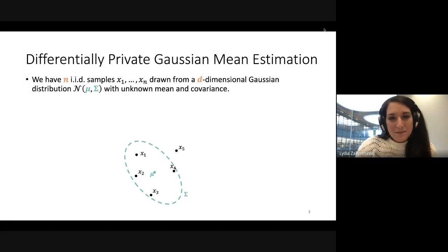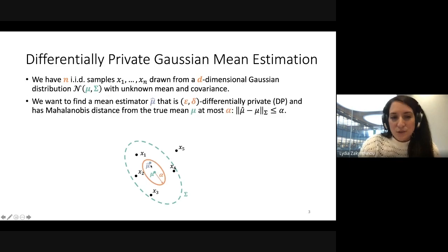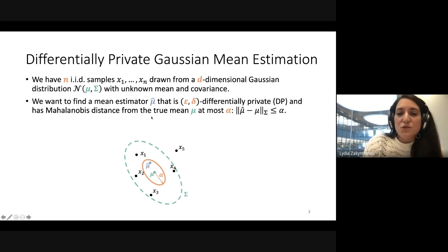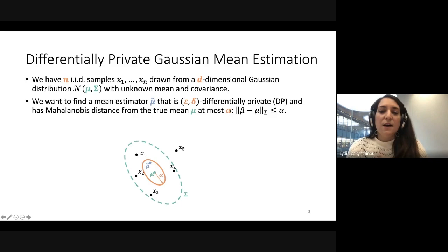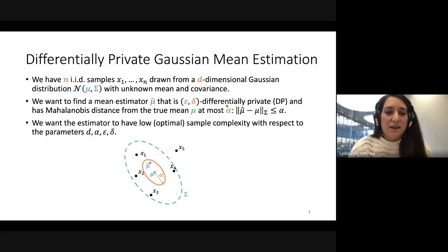In this setting, our input is n IID samples drawn from the d-dimensional Gaussian distribution, which has an unknown mean mu and unknown covariance matrix sigma. What we want to do is find a mean estimator, mu hat, that is epsilon-delta differentially private and has Mahalanobis distance from the true mean mu of at most alpha. I'll tell you what both of those things are in a bit, but I wanted to set the parameters of the problem.